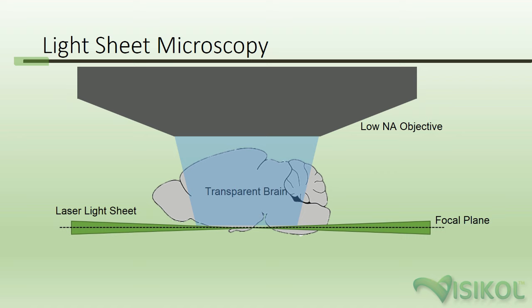The way a light sheet microscope works is by switching from an inverted or upright diffuse light source to a laser light source that is mounted orthogonally to the objective. Using cylindrical shaping lenses, the laser light sheet is transformed into an ultra-thin sheet of light that is, for example, 10 millimeters wide by 5 microns thick.